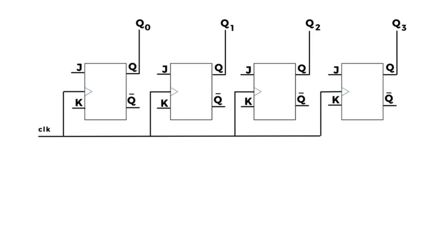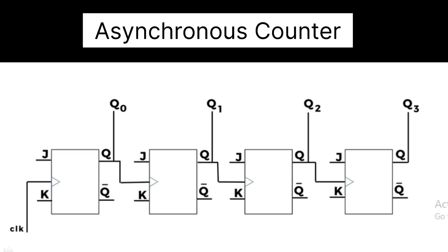As you can see in this diagram, the same clock is given to all the flip-flops and we are getting the output in a parallel manner. The asynchronous counter, also called a ripple counter, is made up of a series of flip-flops. If the flip-flops do not receive the same clock signal, the counter is referred to as asynchronous. Only the first flip-flop receives a clock signal from the system clock; the remaining flip-flops receive the clock signal from the previous stage flip-flop output, as shown in the figure.